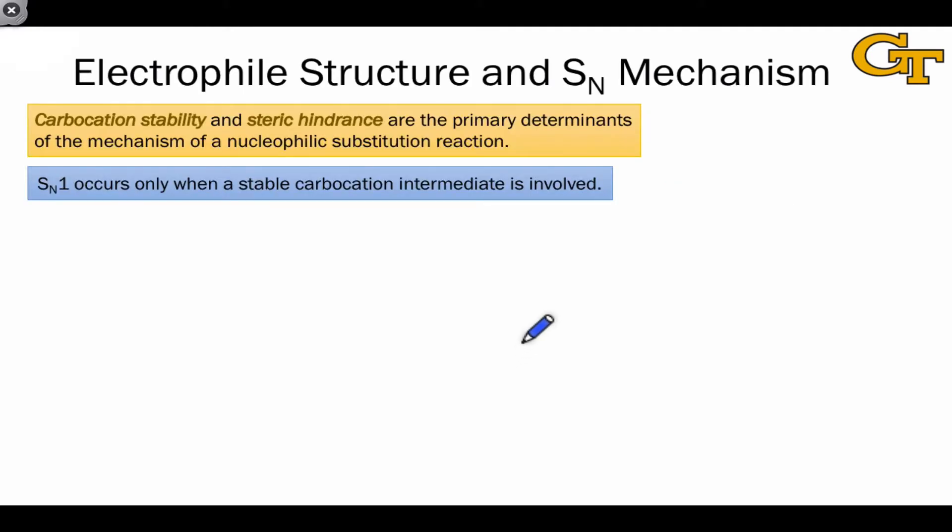In fact, we've already seen the two key factors that govern whether SN1 or SN2 will occur. Carbocation stability, which tends to favor the SN1 mechanism, and steric hindrance, which tends to discourage SN2.